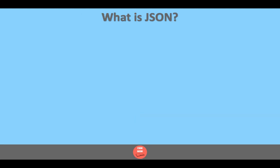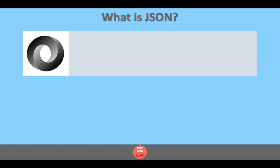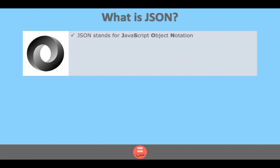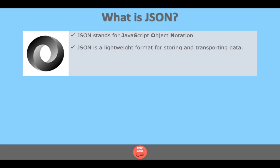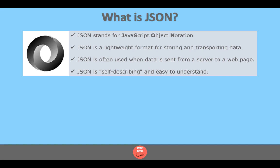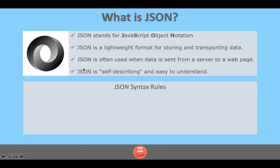Now I will talk about JSON. JSON stands for JavaScript Object Notation. It is a lightweight format for storing and transporting data. JSON is often used when data is sent from a server to a web page or any mobile application. It is easy to describe and understand.